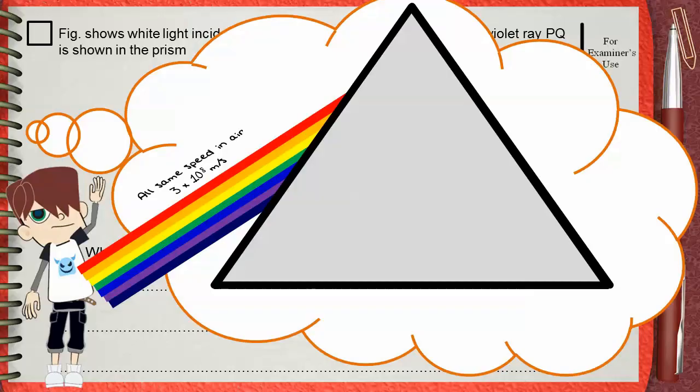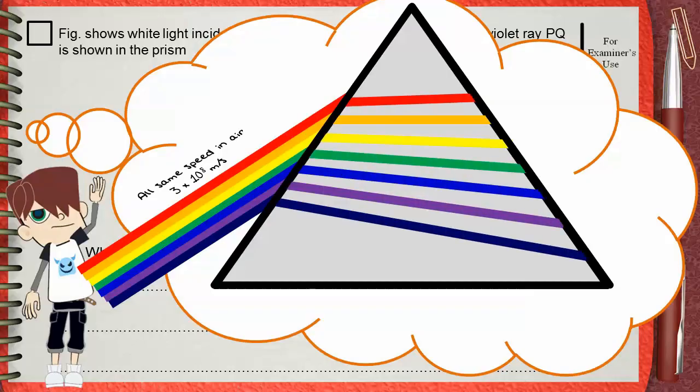This is because now they don't have the same speed. All their speeds have been decreased, with red having the less decrease in speed. That's why it's the fastest in glass. And violet having the greatest decrease in speed. That's why it's the slowest in glass.